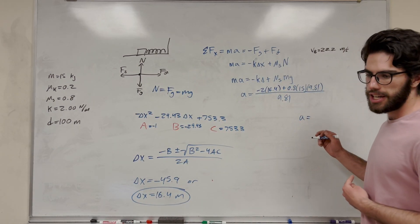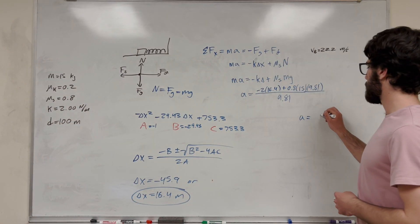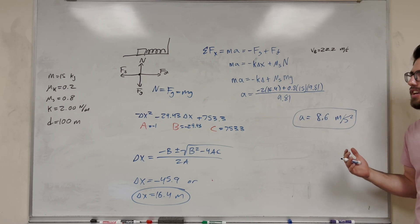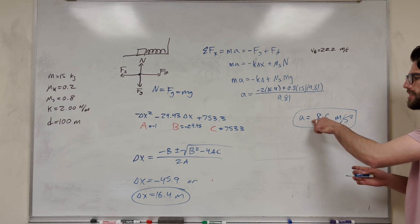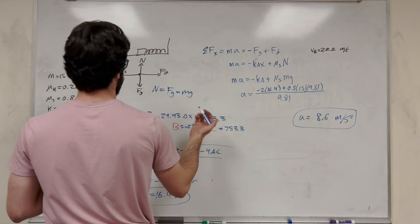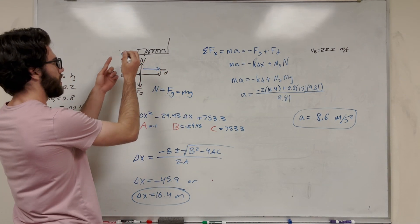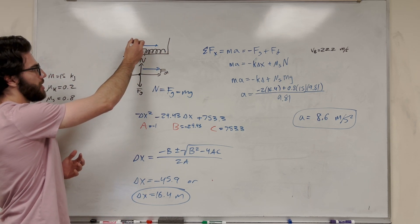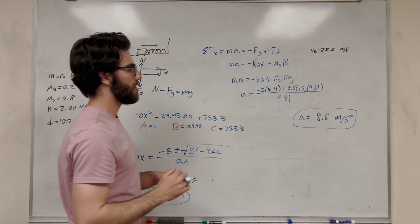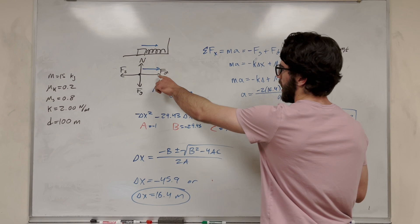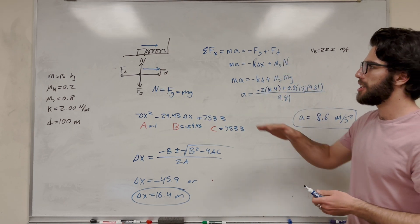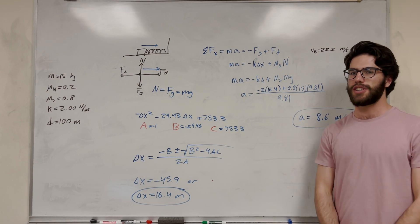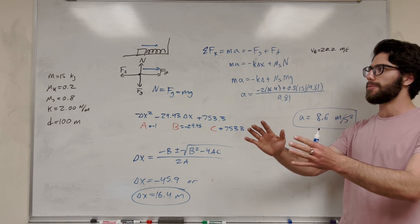The result is approximately positive 8.6 meters per second squared. A positive acceleration means we're not accelerating to the left. The spring does not overcome the force of static friction — friction can match or exceed the spring force. The block will come to rest and stay there. The spring does not overcome friction; the block remains stationary.